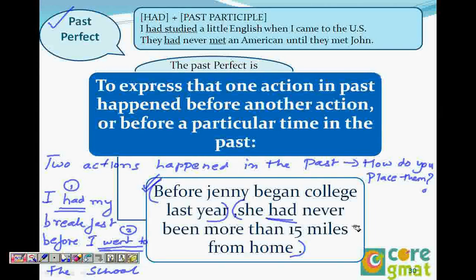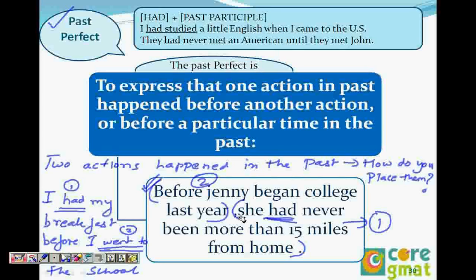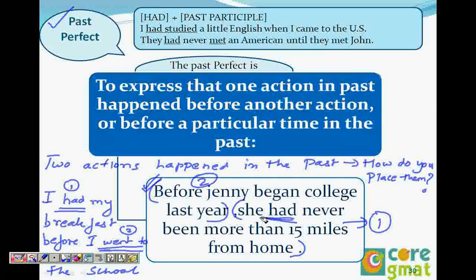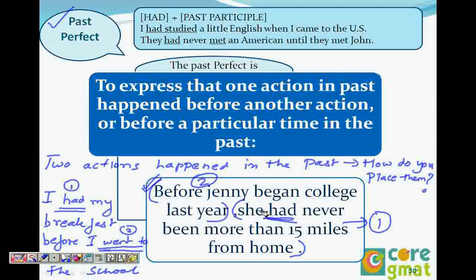So what you are saying is: 'She had never been more than 15 miles from home.' How would you construct this sentence? 'She had never been' is always the first part. She had never been more than 15 miles from home before she began college last year. Whether you place the clause at the front or at the end, whatever clause has 'had' means that's the first action that happened.